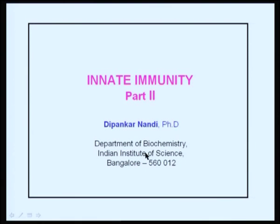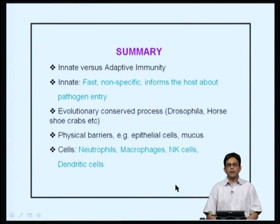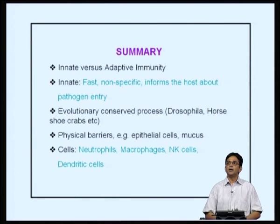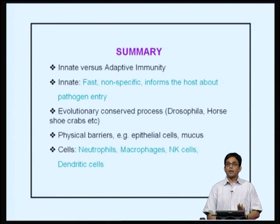Today we will be starting off with the second part of innate immunity. Before we go into that, it might be a good idea to summarize some of the main aspects of the last lecture. The first is the importance of innate versus adaptive. Innate is a quick response; it is non-specific and does not differentiate between different types of bacteria, but it tells the host that some sort of invasion has taken place. It is an evolutionarily conserved process, present in lower organisms such as Drosophila, horseshoe crabs, etcetera.